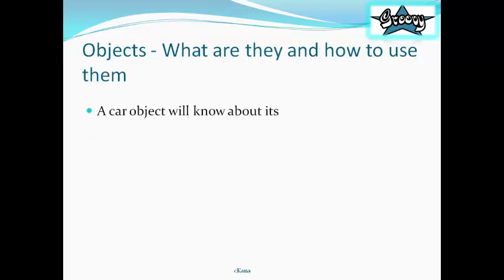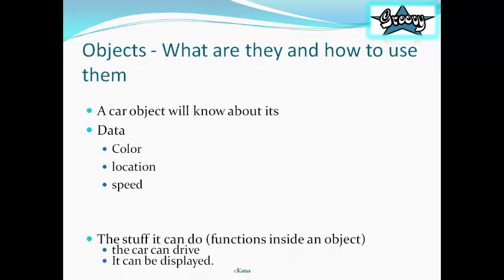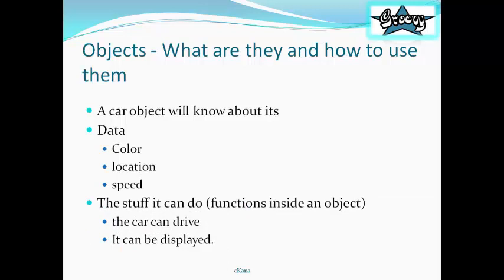Now a car object will know about its data, its color, its location, its speed. And will also know about the stuff that it can do or the functions inside the object that the car can drive, can be displayed.